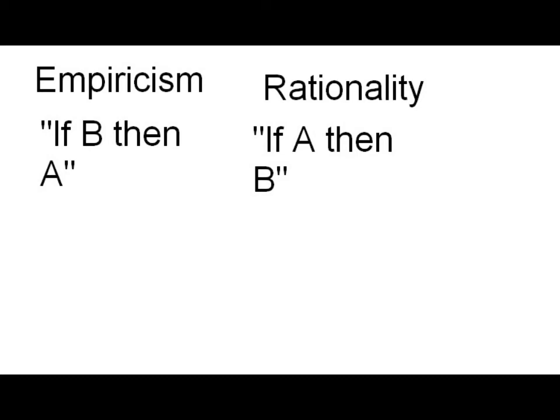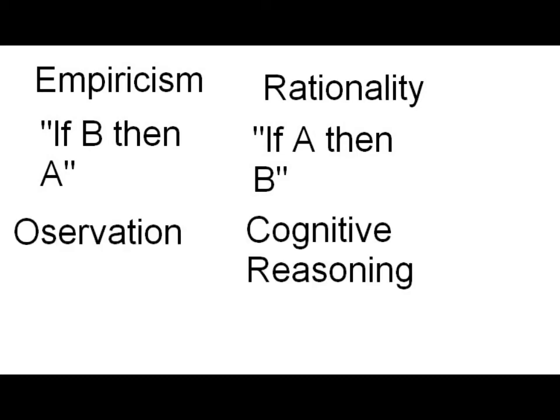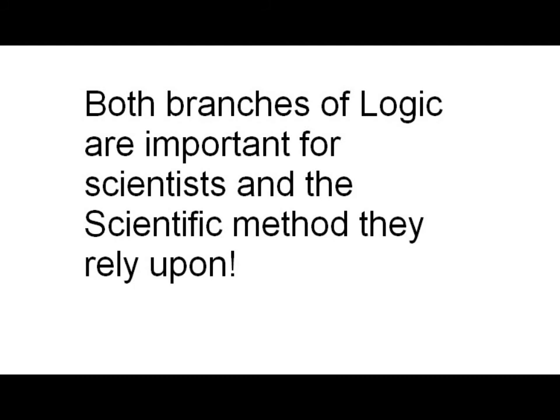It is very important to know that both branches are very important to science. You can't have science without both branches of logic. So 'if B, then A' is observation, and 'if A, then B' is your cognitive reasoning. Both branches of logic are important to scientists and the scientific method they rely upon.